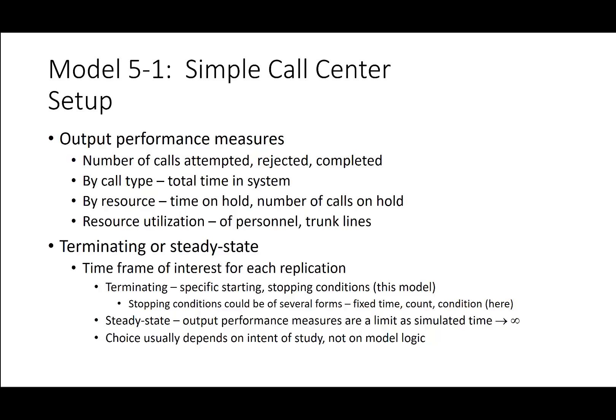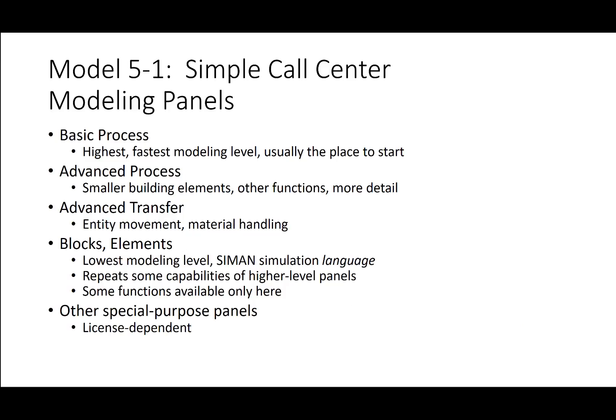Steady state output performance measures are a limit as simulated time goes to infinity, and the choice usually depends on the intent of the study, not on model logic. The basic process panel is the highest, fastest modeling level and is usually the place to start. The advanced process panel offers smaller building elements and other functions with more detail. Advanced transfer handles entity movement and material handling. Blocks and elements represent the lowest modeling level of the SIMAN simulation language, with some functions available only there.